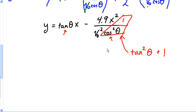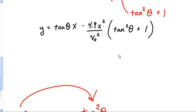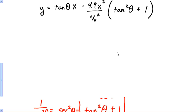This is going to become Y equals tangent theta X minus 4.9 X squared over V0 squared times tangent squared theta plus one. Now I'm going to plug some numbers in. Let's go ahead and plug some numbers in. That would be 3.44 equals tangent theta times 50 minus 4.9 times 50 squared over 25 squared.